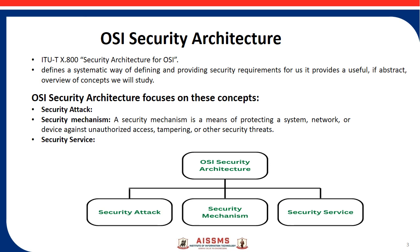The OSI security architecture focuses on three concepts. The first is a security attack — it is an attempt by a person or entity to gain unauthorized access, disrupt, or compromise the security of a system, network, or device. These are defined as actions that put an organization's safety at risk.